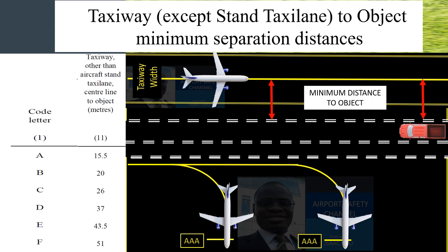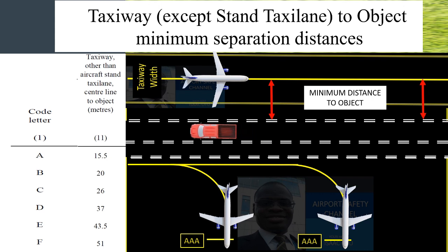Let's look at taxiways — except stand taxiway — to object minimum separation distances. For this type of separation, it highlights the minimum separation between a taxiway and an object. This is a service road which is designed to contain an object like a vehicle or ground service equipment. The edge of the service road is considered to be the start of the object zone; therefore, measurements end at road edges.